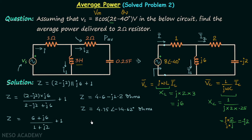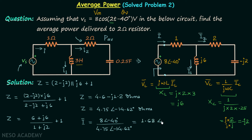Now it is very easy to find I phasor. It equals 8∠−40° divided by 4.75∠−14.62°. When you solve it, I phasor = 1.68∠−25.38°.